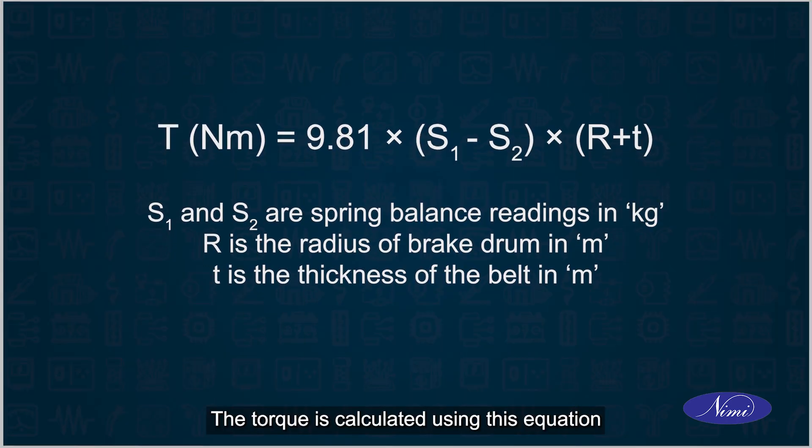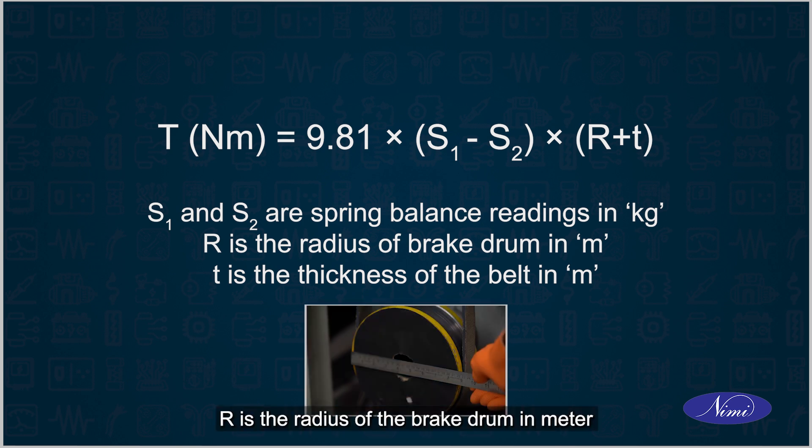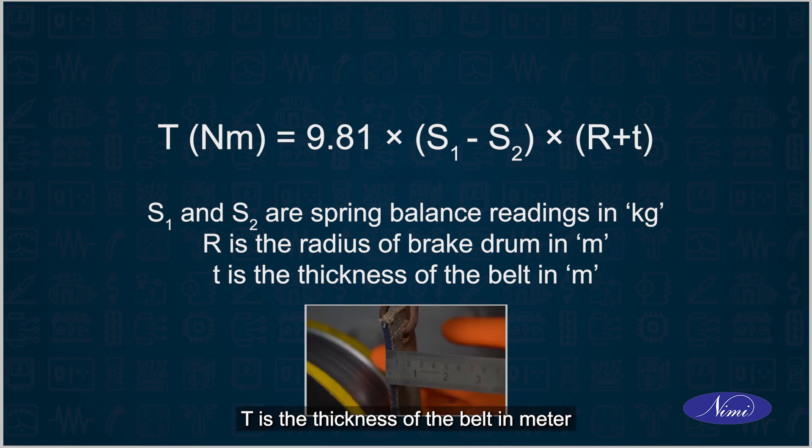The torque is calculated using this equation. T in newton meter is equal to 9.81 into S1 minus S2 into R plus T. S1 and S2 are the spring balance readings in kg. R is the radius of the brake drum in meter. T is the thickness of the belt in meter.